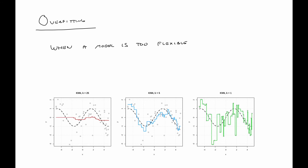Now we can talk about overfitting. Overfitting occurs when a model is too flexible, and the training error becomes overly optimistic — essentially we have fit to noise. On the far right, k=1 gives a far too wiggly curve that clearly overfits. On the left, k=25 gives a simpler curve — that's underfitting. In the middle we have a Goldilocks scenario: not overfitting, not underfitting.